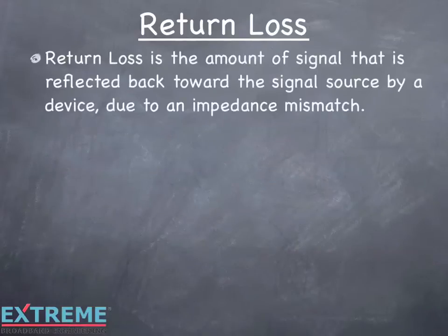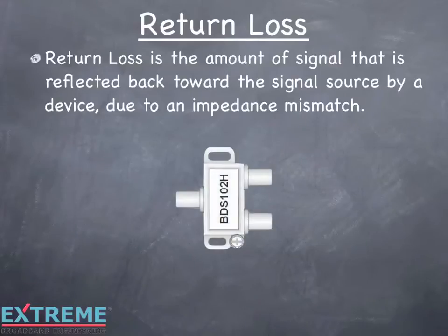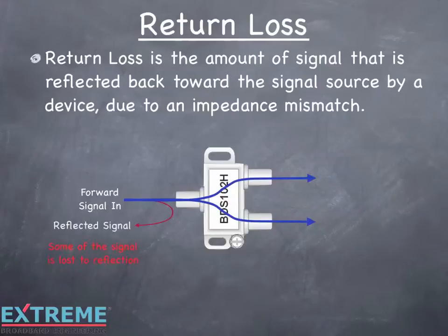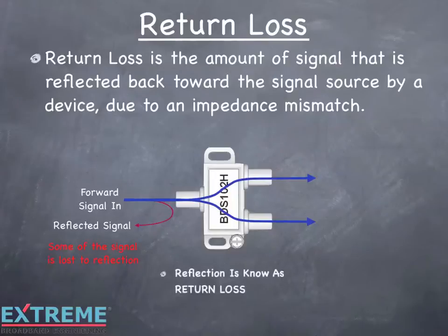Return loss is the amount of signal that is reflected back towards the signal source by a device due to an impedance mismatch. In this example, we're showing a two-way splitter with a forward signal feeding the input. Ideally, we'd like all the signal to flow through the splitter to both output ports. But in reality, some of the signal is reflected back towards the signal's original source. This signal loss due to reflection is known as return loss.